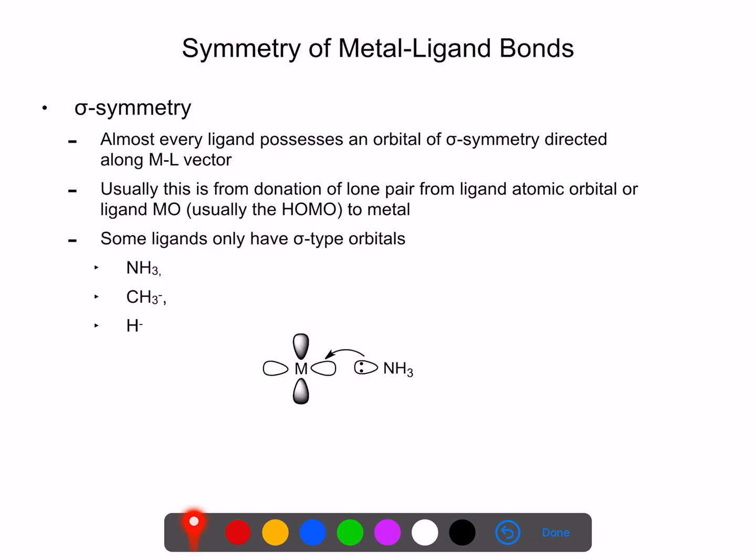Like in this case here, where the ammonia is donating its electron pair into an md orbital, as shown here, and forming a sigma bond. And so typically, we think about this as the HOMO of our ligand going into one of the lower-energy, unoccupied molecular orbitals of our metal complex. Some examples of ligands with sigma-type symmetry include ammonia, this CH3- anion, or a hydride.